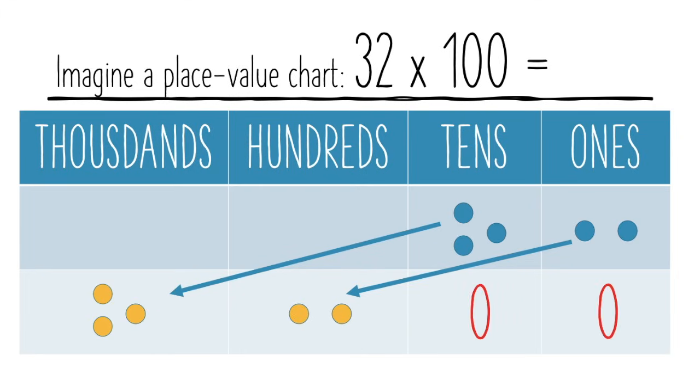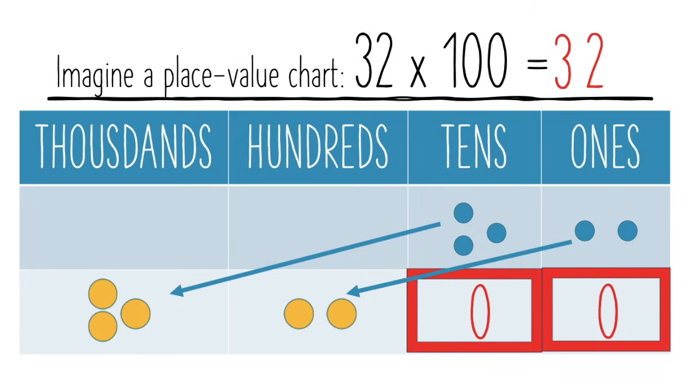When we write our representation as a number, we see that there are 3,000 and 200. This time there are two empty boxes at the end, which means that we have to add both of those zeros to the end of our final number. 32 times 100 equals 3,200.